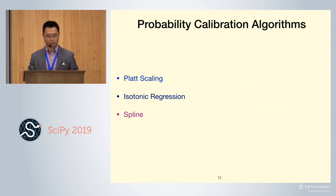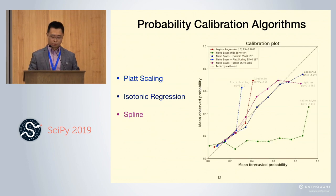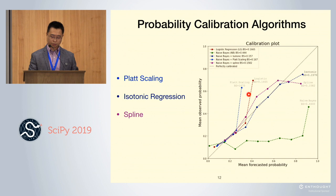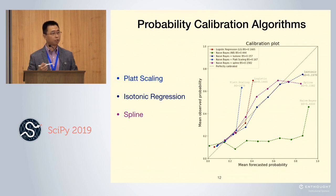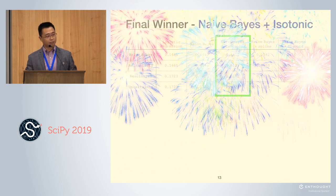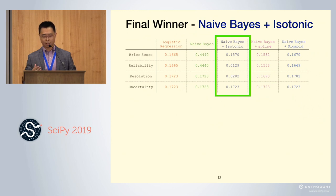Let's take a look at the results after calibration. The green one is the original naive Bayes model and the red one is logistic regression. If you look at the Brier score, all three calibration algorithms significantly improved the naive Bayes model. The best one, isotonic regression, provides a Brier score of 0.157. It's even better than logistic regression. So the final winner is naive Bayes with isotonic regression calibration.